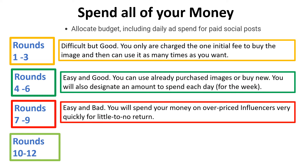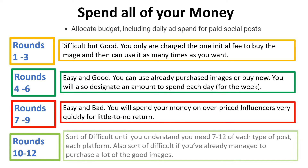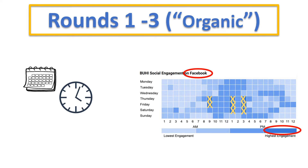On rounds seven through nine it was easy to spend all of the money, but bad — you'll spend all your money on overpriced influencers very quickly for little to no return. I'm mentioning it here because I don't want you to get discouraged. On rounds ten through twelve, it's sort of difficult until you understand you still need 7 to 12 of each type of post on each platform, and it's also tricky if you've already purchased a lot of the good images.